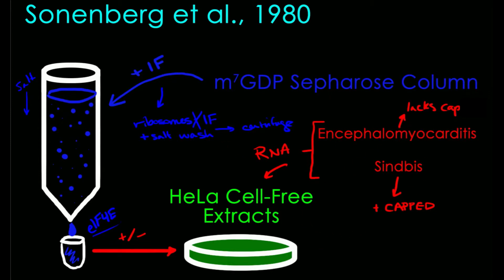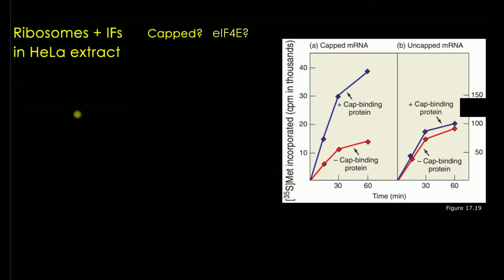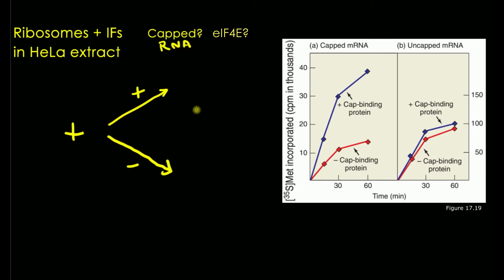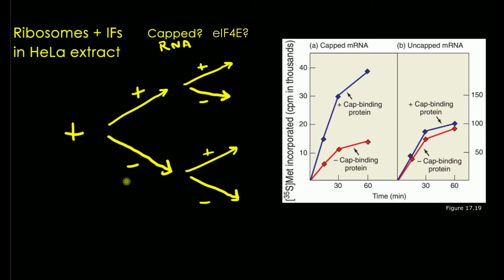So we are either adding or not adding our cap binding protein into a solution containing ribosomes and either capped or uncapped RNA. To visualize this, the authors incubated everything in a solution containing 35S methionine — radiolabeled methionine — which gets incorporated into any proteins made by the cell-free extracts from these RNA transcripts. In summary, the experimental paradigm had four conditions: yes capped RNA with cap binding protein, yes capped without, no capped with, and no capped without.